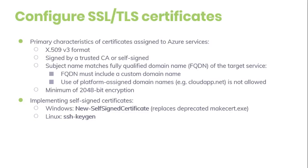Use a minimum 2048-bit encryption. To create a self-signed certificate in Windows, use the New-SelfSignedCertificate cmdlet, which provides the appropriate makecert.exe utility. On Linux, you can use ssh-keygen.